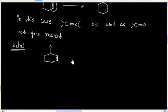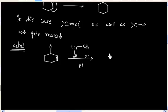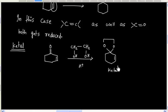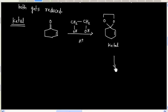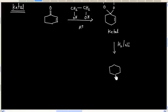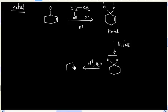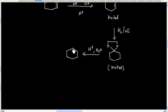First, let us react this compound with ethylene glycol in acidic medium to form the ketal. Then we can do catalytic hydrogenation — this time we will only reduce the double bond. And finally we can do hydrolysis of the ketal.